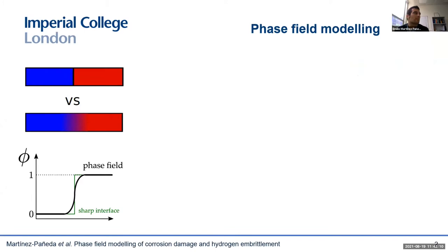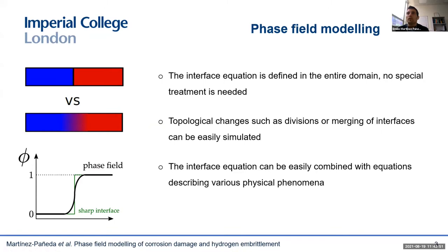Let me start by introducing the phase field modeling paradigm. Many engineering problems revolve around interfaces, and mathematically we have two ways of dealing with interfaces. One is by treating the interface as a surface without a thickness — a two-dimensional manifold embedded into the 3D Euclidean space. Alternatively, we can treat the interface as an object with a finite thickness by using an auxiliary phase field variable that tells us where the interface lies. Here we have two phases, and the phase field variable takes a distinct value in each phase, 0 and 1, and varies smoothly in between at the interface. There are multiple benefits associated with this idea of having a diffuse interface. One is that the interface equation is defined in the entire domain, so there's no need for special treatment of the interface. Another benefit is that topological changes, such as divisions or merging of interfaces, can be easily simulated without any ad hoc criteria.